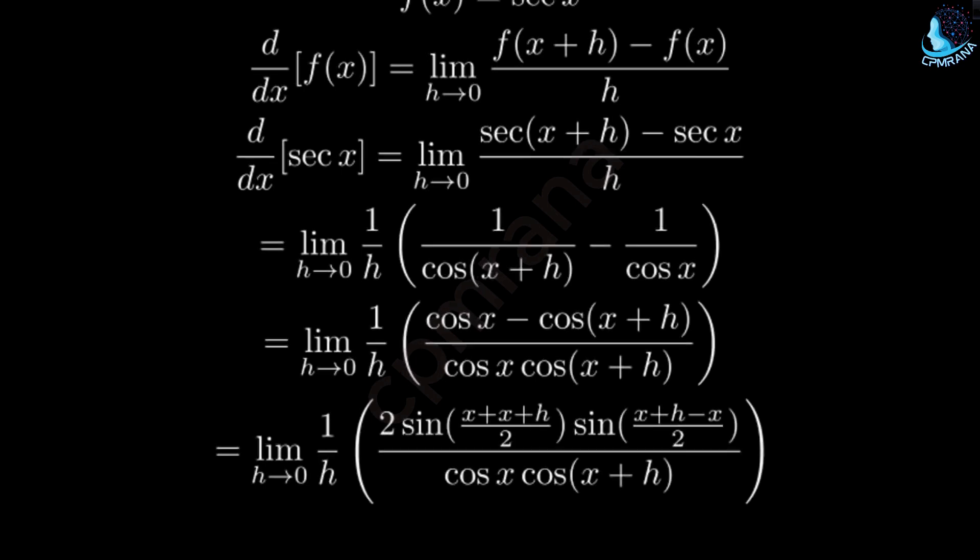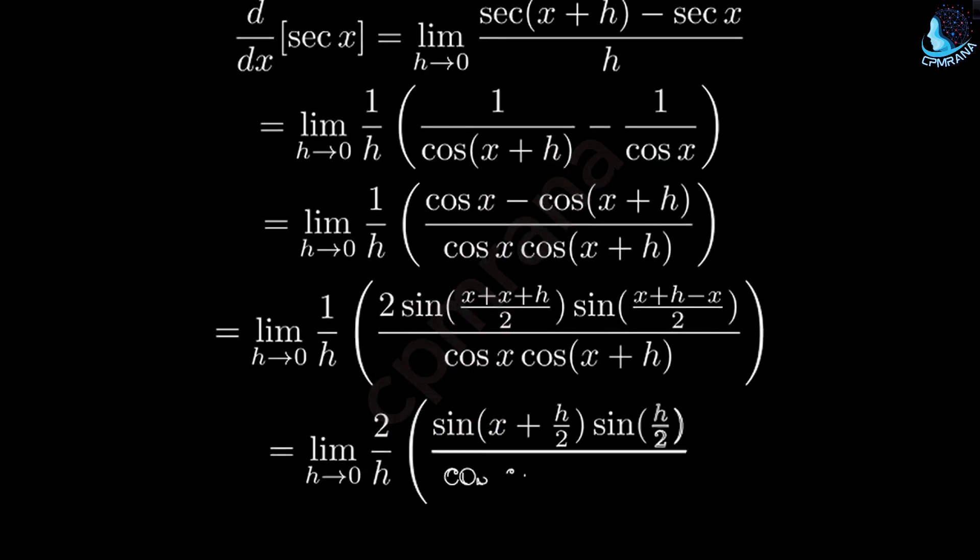Let's simplify the arguments. The first sine term becomes sin(x + h/2), and the second becomes sin(h/2).